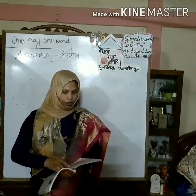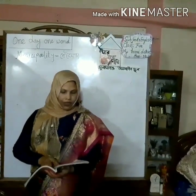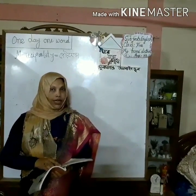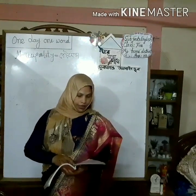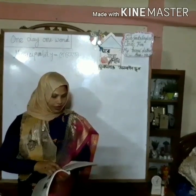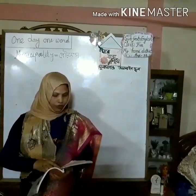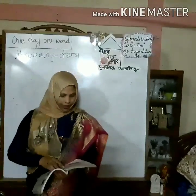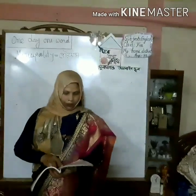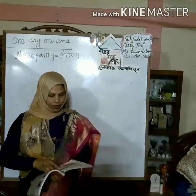My home district is Kishoreganj. It is about 145 kilometers from Dhaka. It is a district headquarters. The district has 8 municipalities, 13 upazilas, 108 unions, and 1745 villages. The name Kishoreganj comes from the name of an old landlord, known as Vrajakishwar Pramanik or Nandakishwar Pramanik. The area of Kishoreganj municipality is about 10 square kilometers.